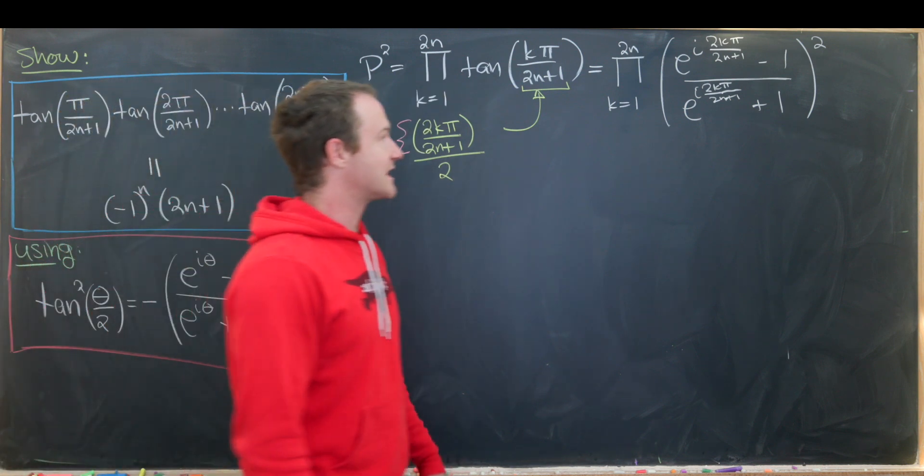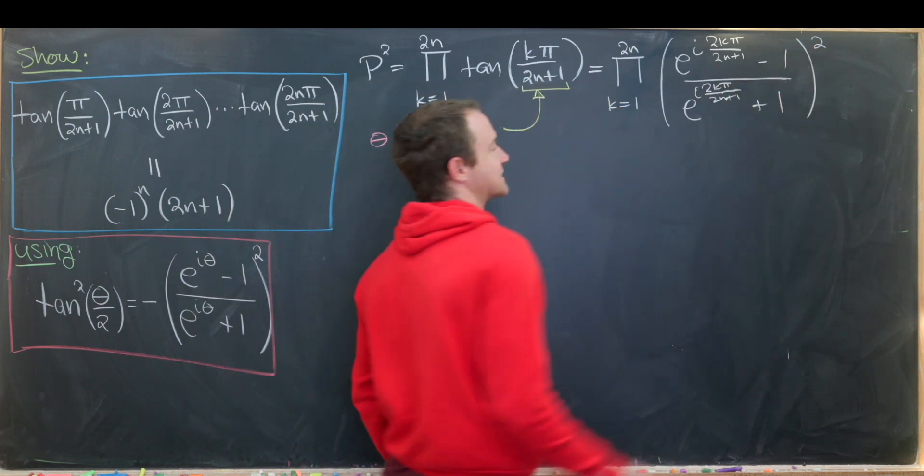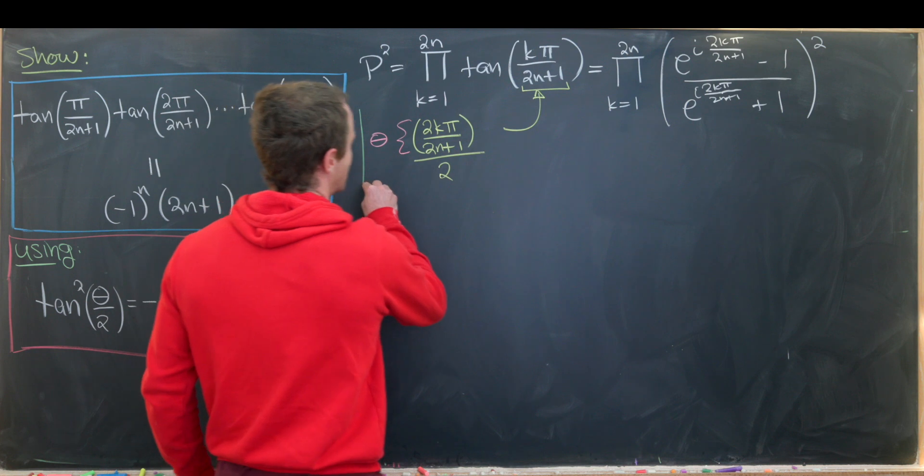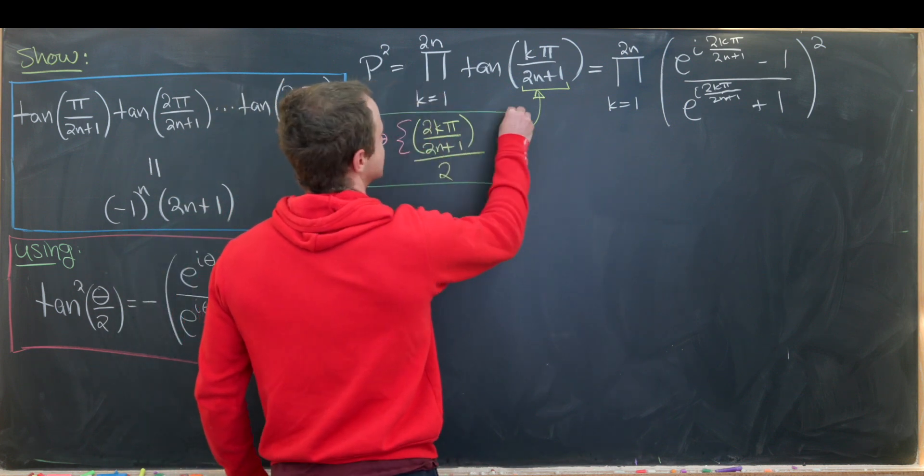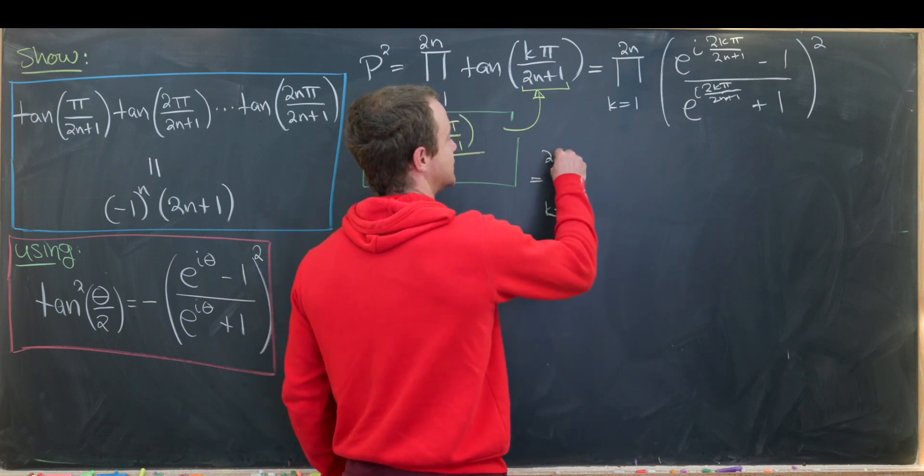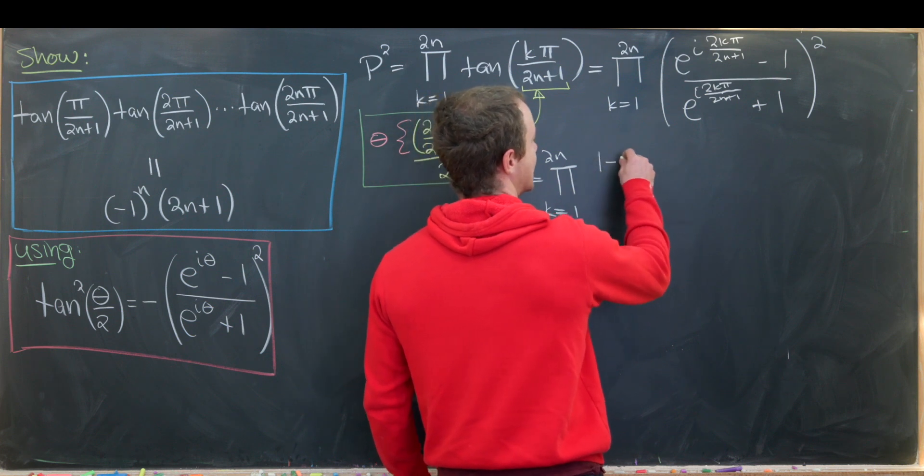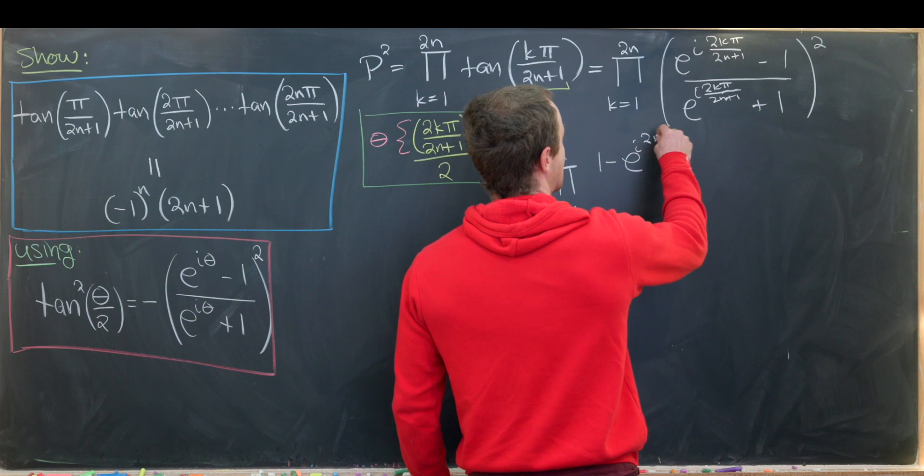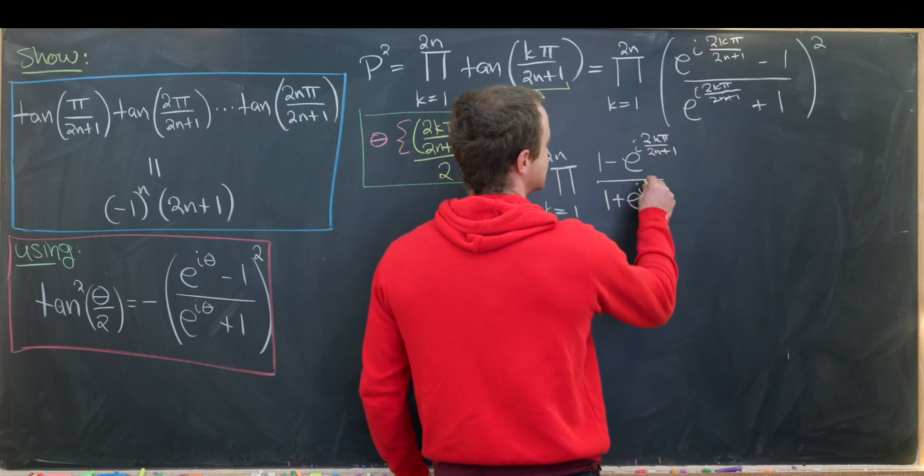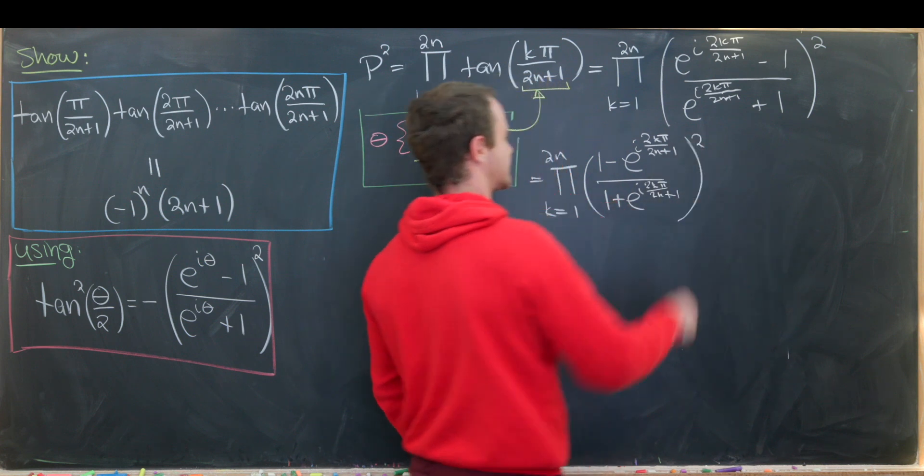Okay so next up I'd like to notice that I've got a square here. That means I can change the order of subtraction without any problem because that just picks up a minus sign. So I'll do that. Maybe I'll box this off so it's not in the way. And that's going to give us the product as k goes from 1 to 2n of. Now like I said I'm going to write this as 1 minus e to the i 2kπ over 2n plus 1 over 1 plus e to the i 2kπ over 2n plus 1. And that's all squared.